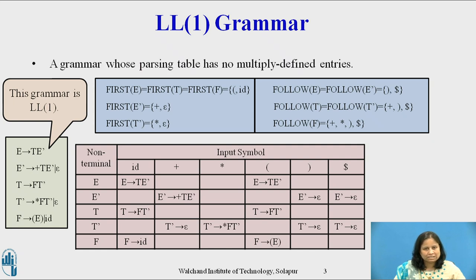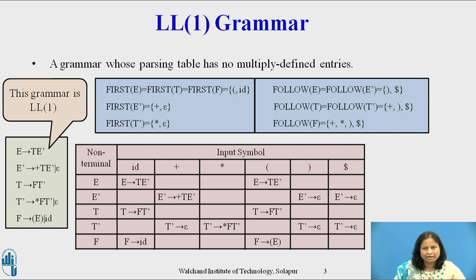A grammar whose parsing table has no multiply defined entries is said to be LL1. The first L in LL1 stands for scanning the input from left to right, the second L for producing a leftmost derivation, and the one for using one input symbol of lookahead at each step to make parsing action decisions.